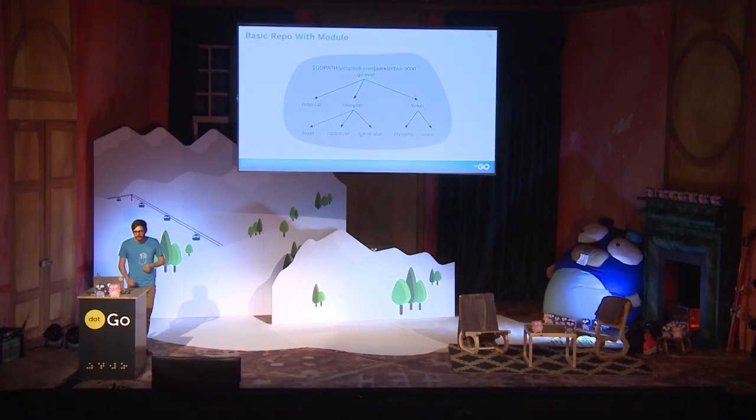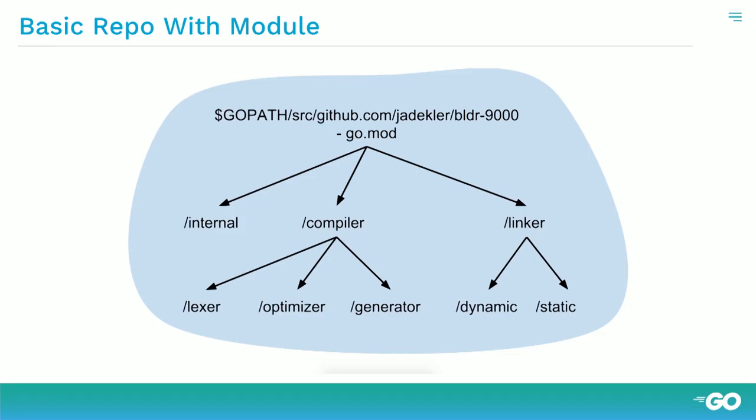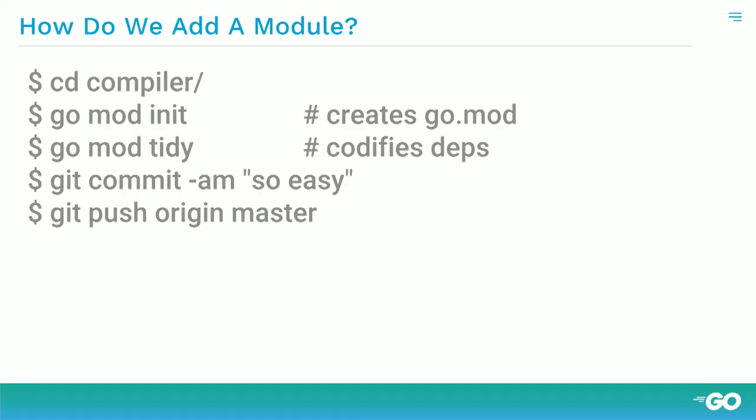So here's what adding a module looks like. We have our old repository, and we want to add the compiler package and all its descendants as a separate module. Let's say Builder 9000 is at version 1.0.3. To add compiler, I cd into compiler, run go mod init, run go mod tidy to codify my dependencies, then commit and push.